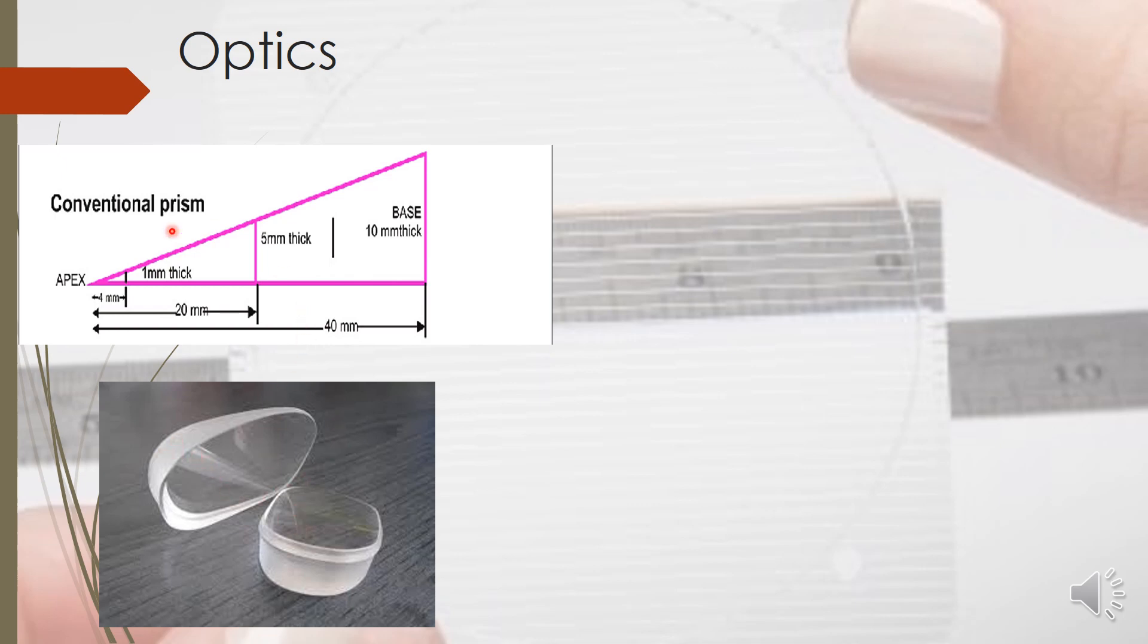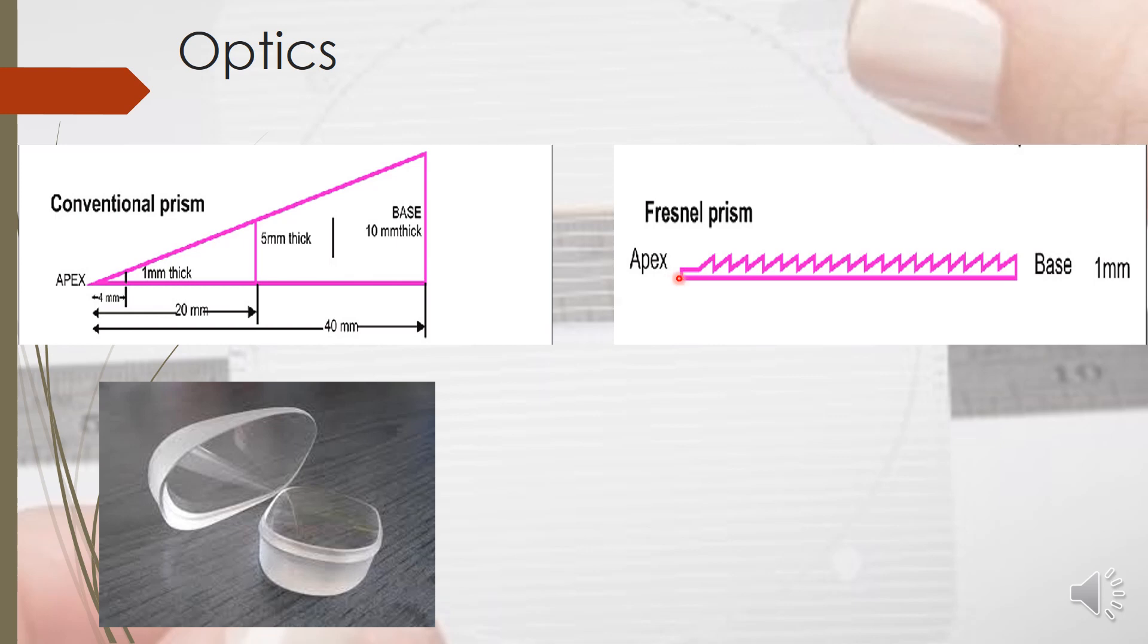Fresnel found out that if a particular prismatic effect is dependent on the apical angle and the refractive index, we need not keep such a bigger chunk of prism. Rather, only one small part of this complete prism can be used to give the similar effect. So they made a stack of such small prisms into a row which could give you the same desired effect. Whenever light is incident onto any particular part, because of the same apical angle and refractive index, it will give the same amount of prismatic effect as the traditional larger prism.